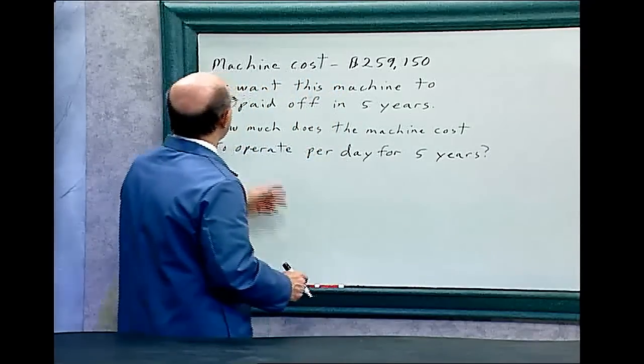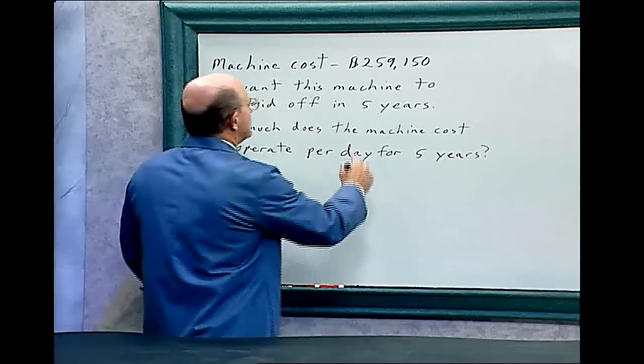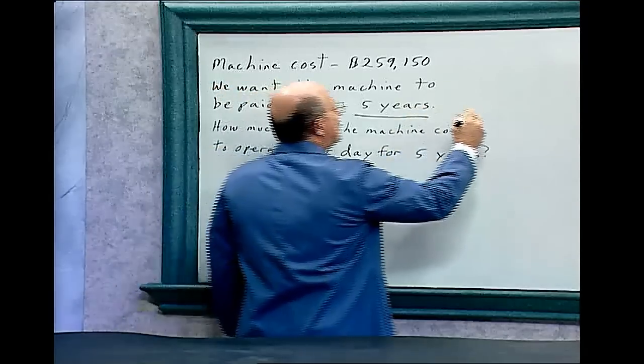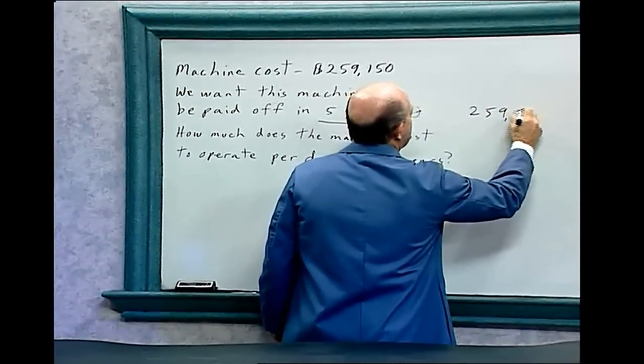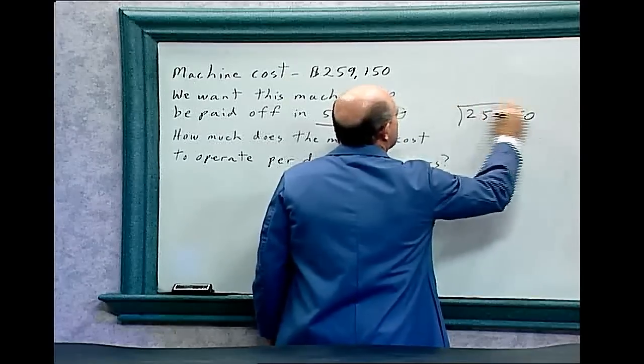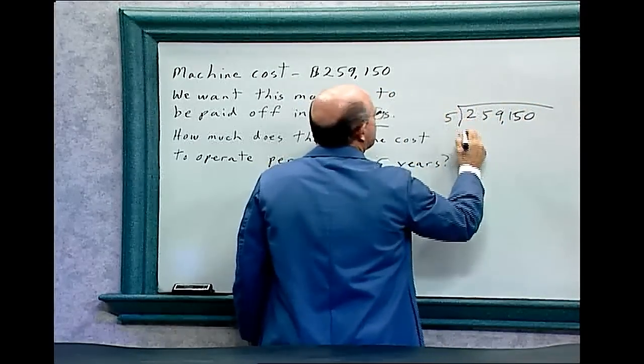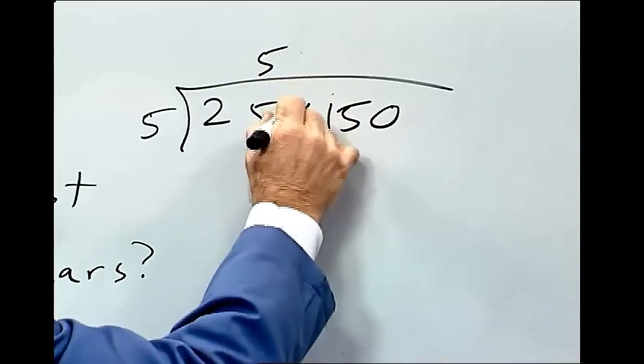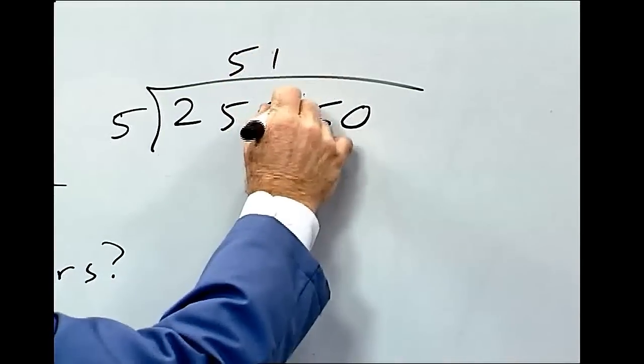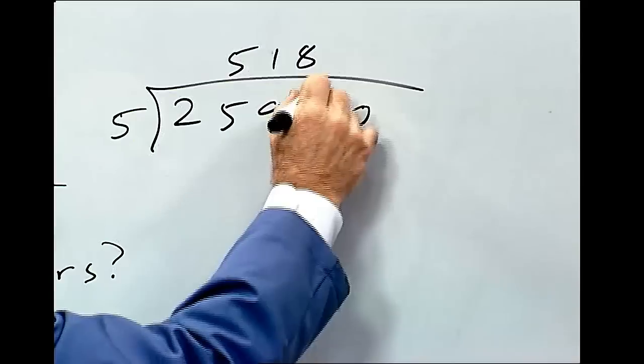So what we have to do then, it's 5 years. Let's divide 259,150 by 5. 5 goes into 25, 5, goes 1 and 4, goes 8, plus 1, plus 3.